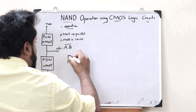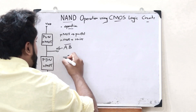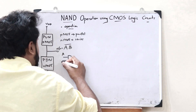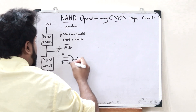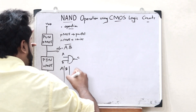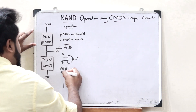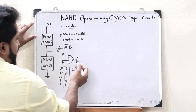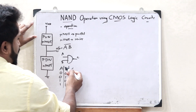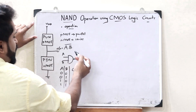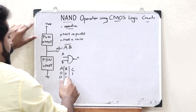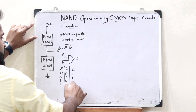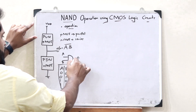The NAND gate is represented like this. If we draw the truth table with inputs A and B and output C: when inputs are 0,0 → output is 1 (complement of 0·0=0 is 1); when 0,1 → output is 1; when 1,0 → output is 1; but when 1,1 → 1·1=1, complement is 0. So the output we have to get is 1, 1, 1, 0.